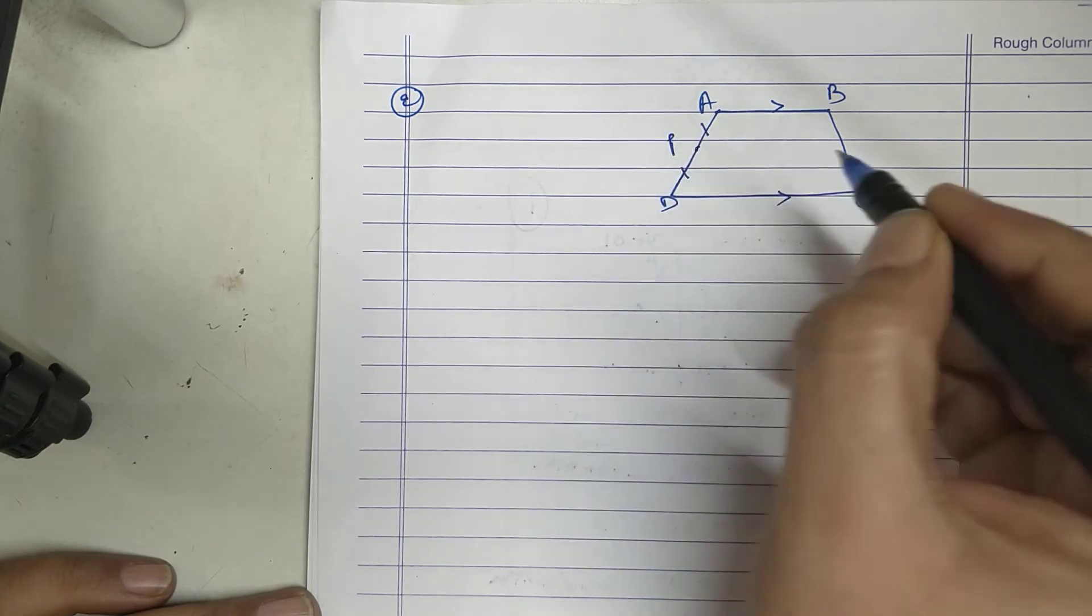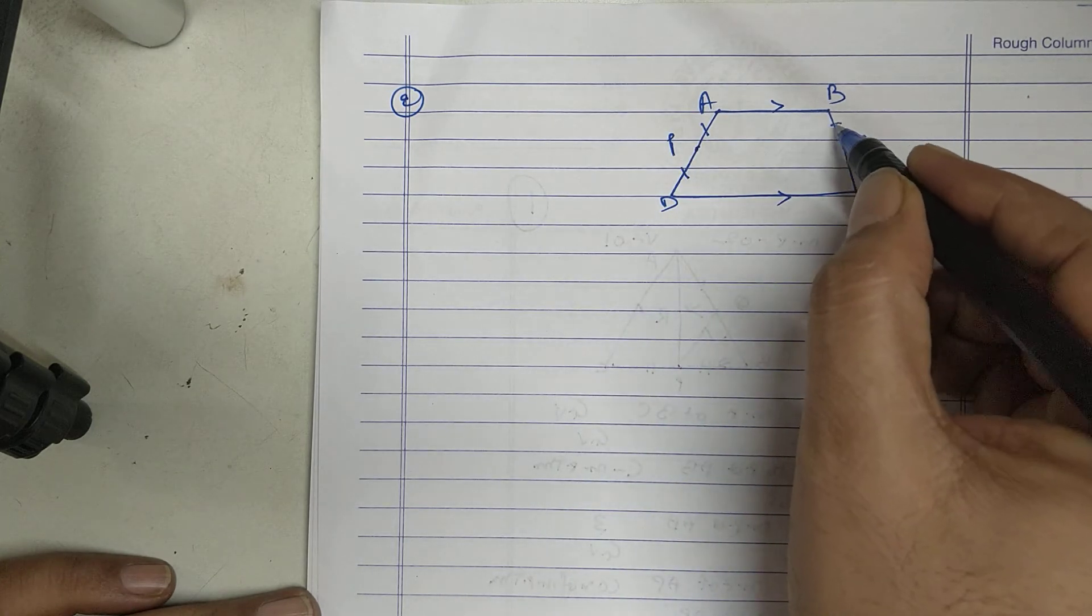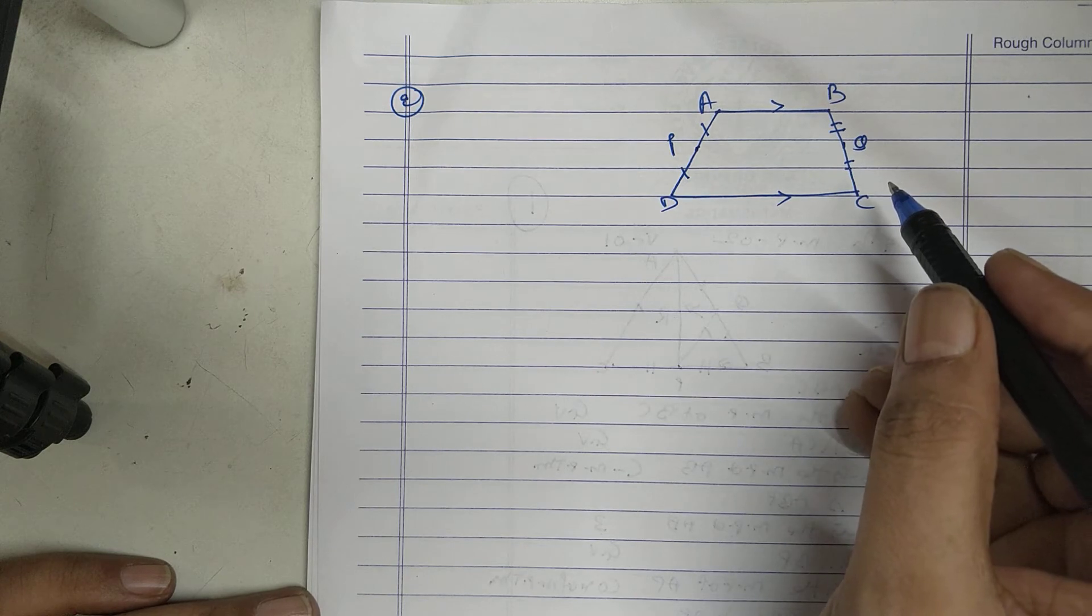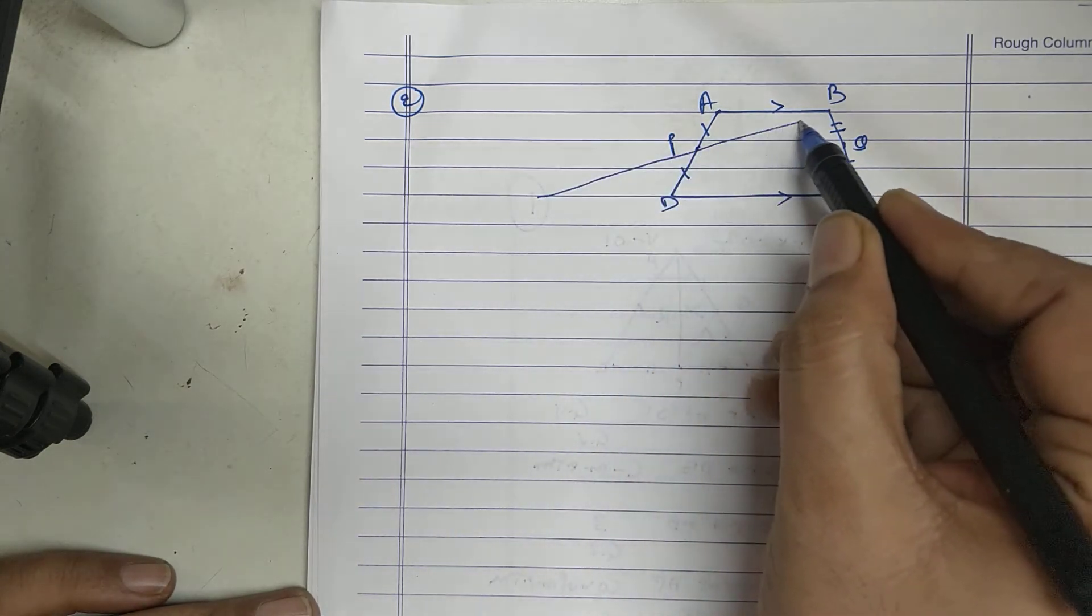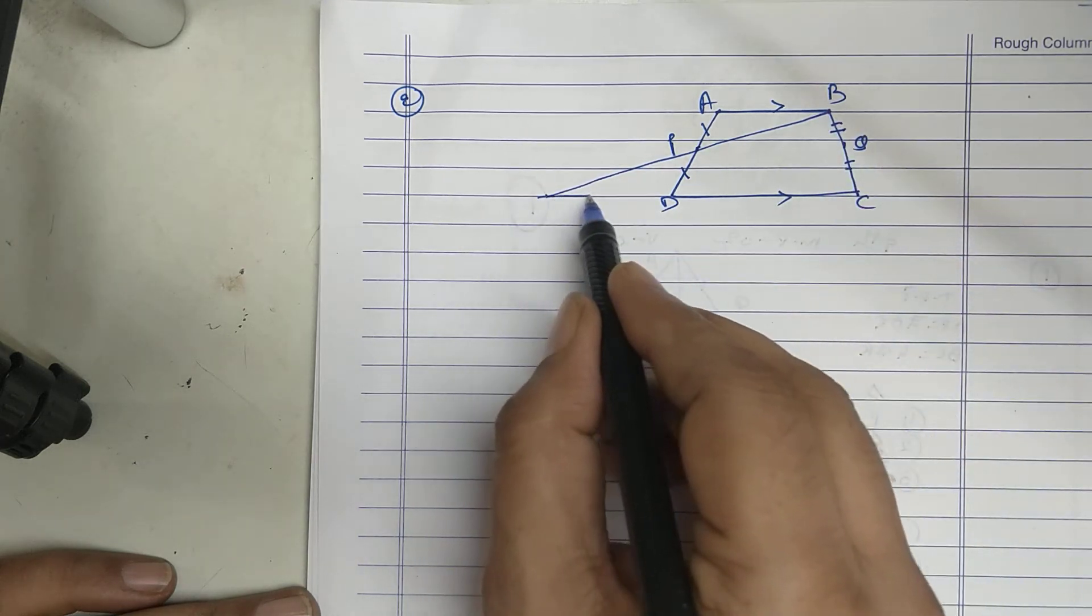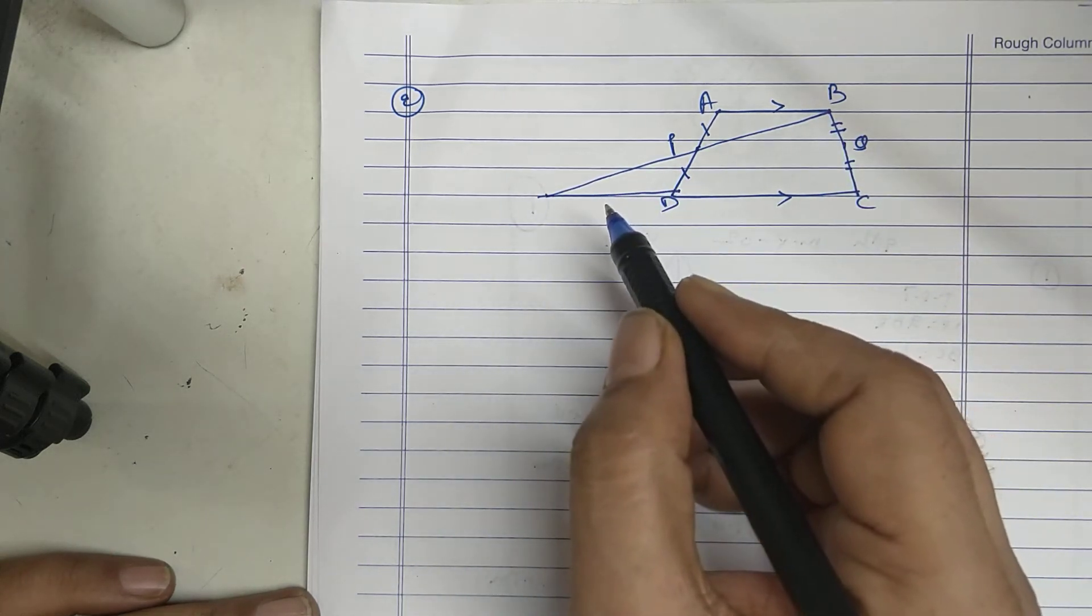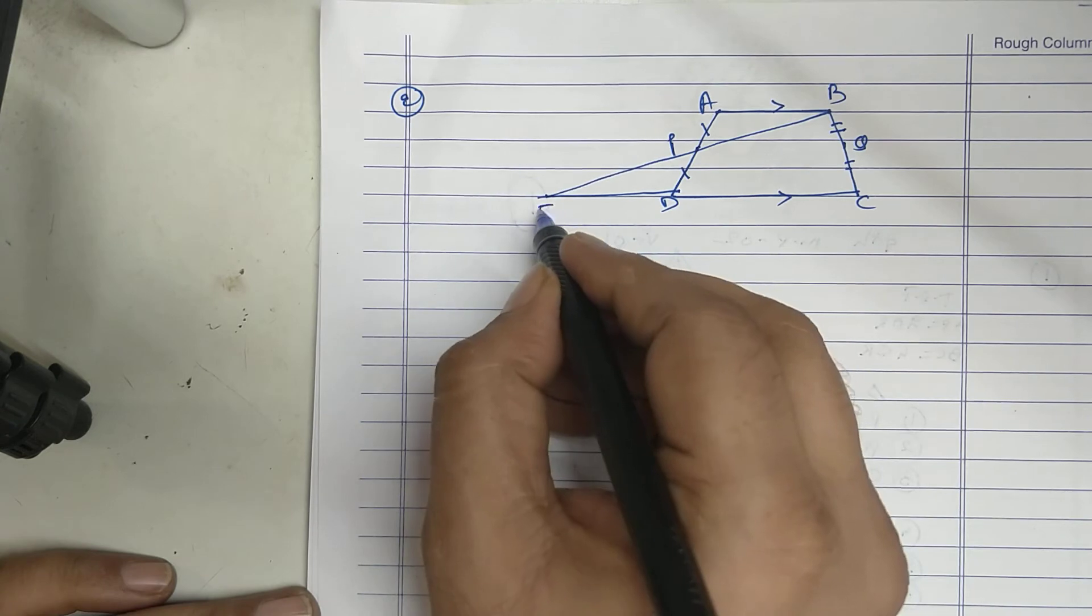P is the midpoint of AD. Q is the midpoint of BC. BP extended to meet CD at E.